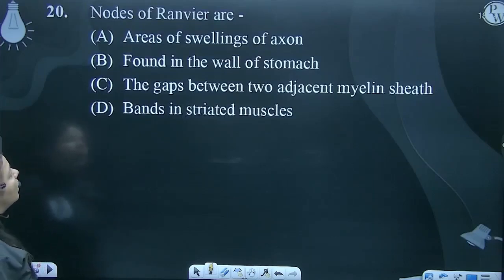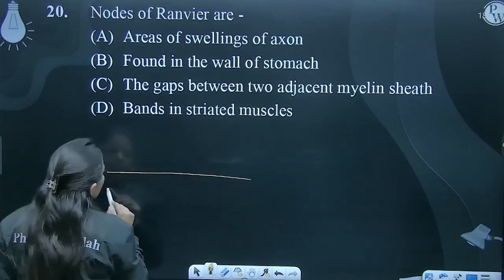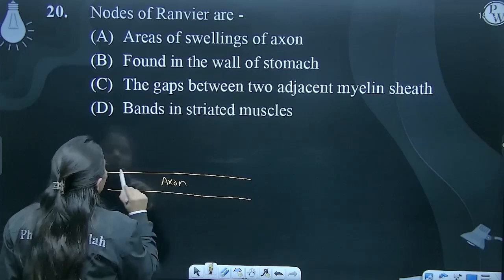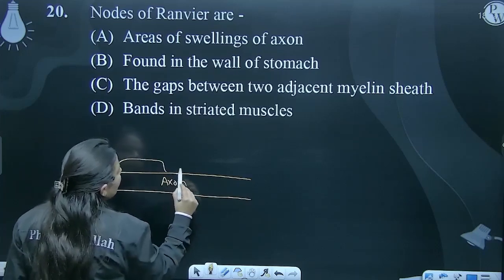Nodes of Ranvier are basically structures, gaps between myelin sheaths, nothing but a gap.